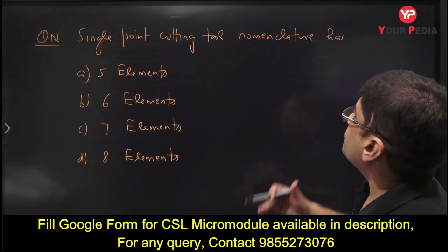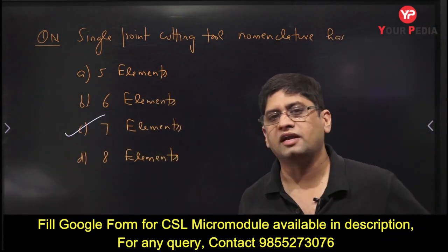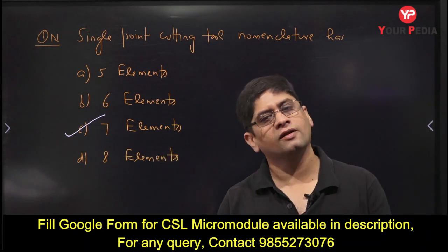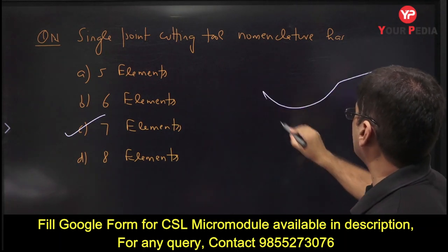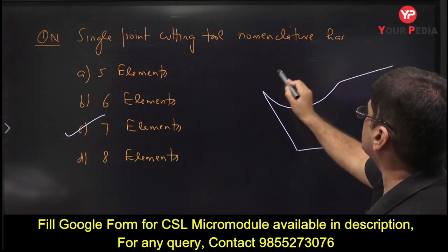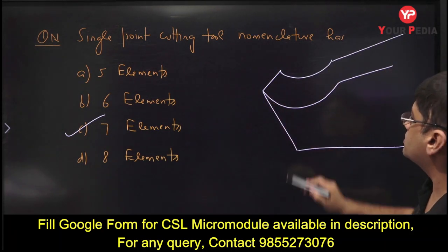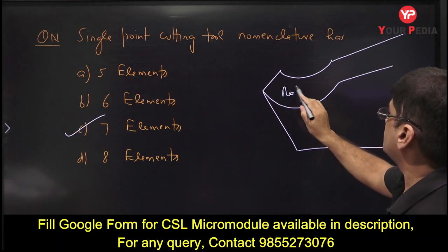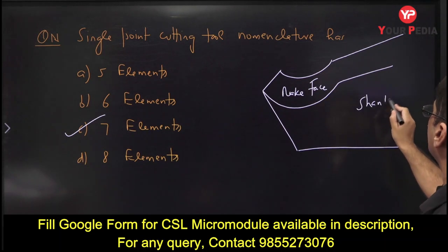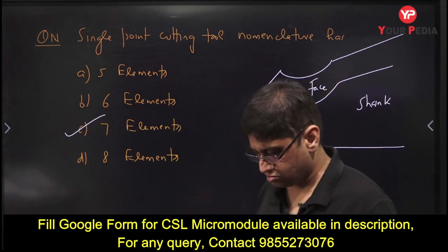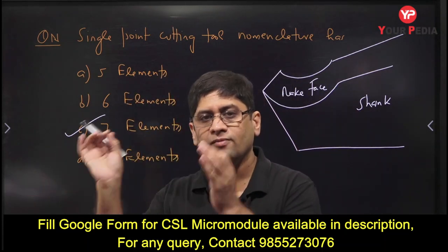Next: single point cutting tool nomenclature. The single point cutting tool has several elements. The rake face is the surface over which the chip flows. Other features include the shank, clearance angle (relief angle), and nose radius. There are seven elements in the nomenclature of a single point cutting tool.